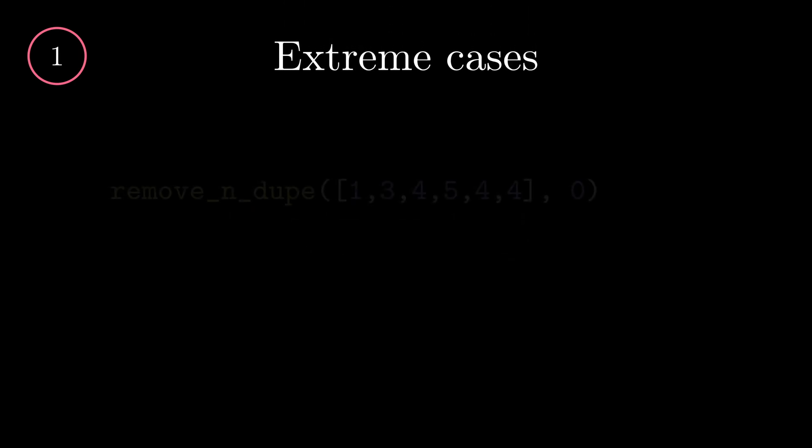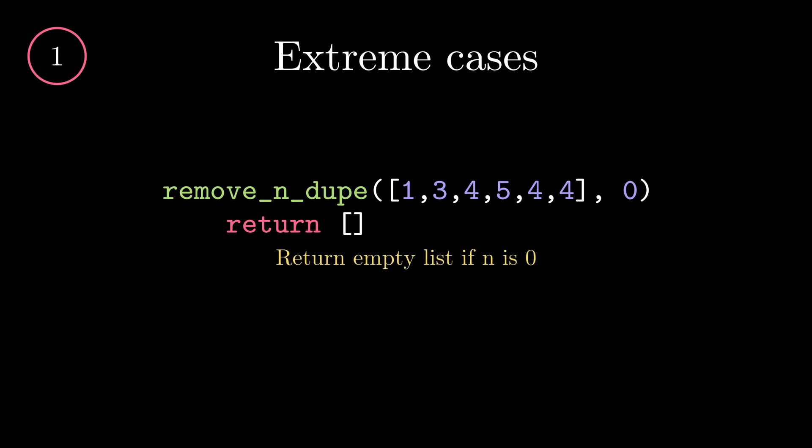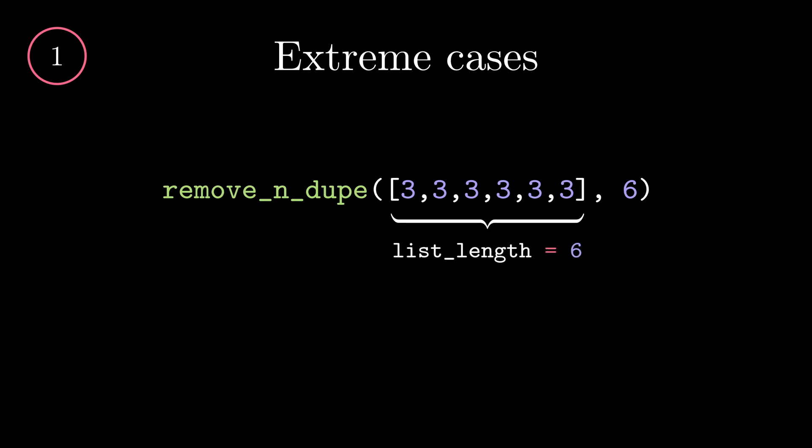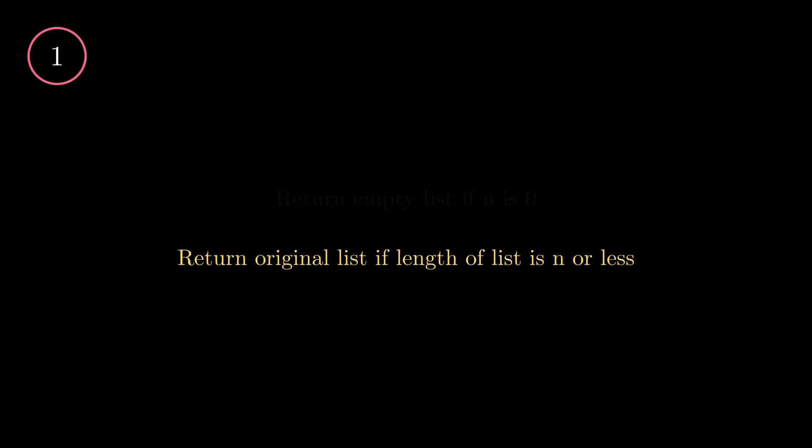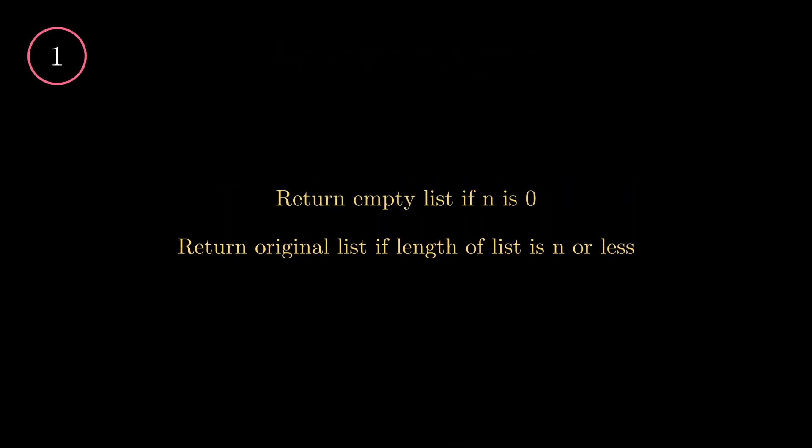An extreme test case like such which causes everything to be removed also further tells us to create a case where we will always return an empty list. We can also ask ourselves, what happens if the list length is less or equals to n? We realize that the function will just return the original list even if the same number repeats itself for the whole of the list. Let's take a mental note of these findings for now as it will come in useful later.